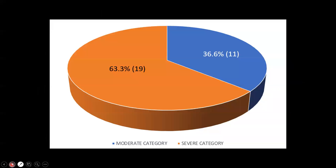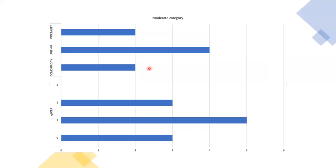Out of the 30 patients included, 11 were in the moderate category and 19 were in the severe category. Of the 11 moderate category patients, 3 had a QSOFA score of 0, 5 had a score of 1, and 3 had a score of 2. Of these, 2 patients had comorbidities and 4 patients had age more than 40 years.